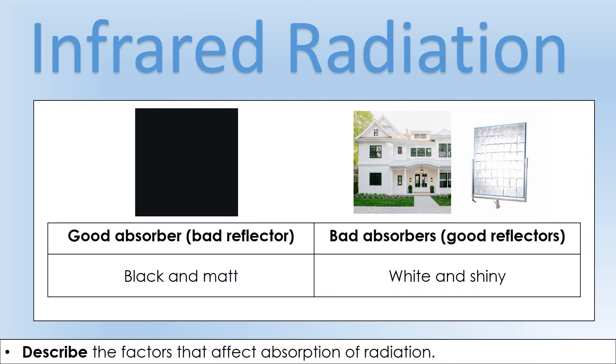If we want to absorb thermal energy, we would have something matte and black. If we don't want it to absorb energy, so if we're in a hot country and we want to not be absorbing as much of the sun's radiation, we would make it white and shiny. This is why a lot of houses are white if you go to hot countries.